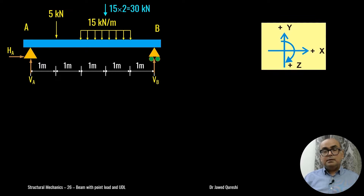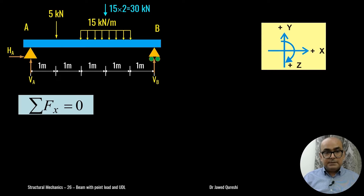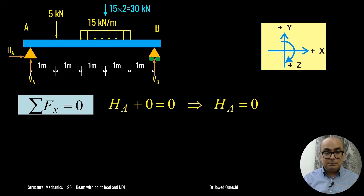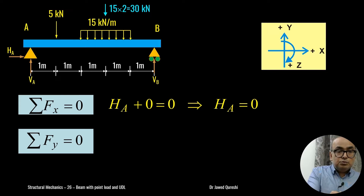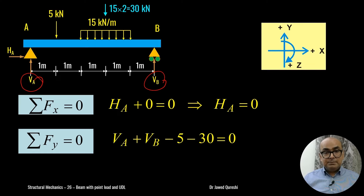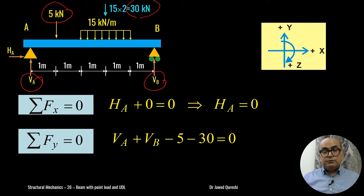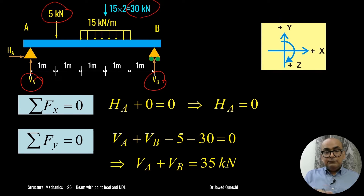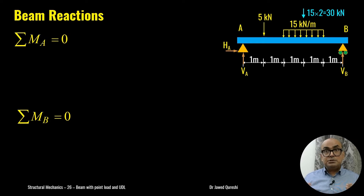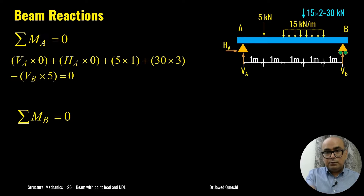The sign convention is: vertical forces positive upwards, horizontal forces positive rightwards, and clockwise moments are positive. From ΣH=0, since only one horizontal reaction acts and there are no other horizontal forces, the horizontal reaction is zero. From ΣV=0, the two upward reactions Va and Vb minus the 5 kN point load minus the 30 kN UDL total gives Va + Vb = 35 kN. To find individual reactions I will take moments at A and at B.